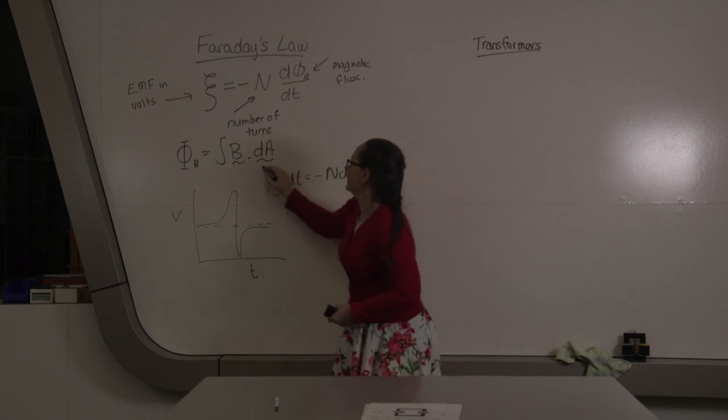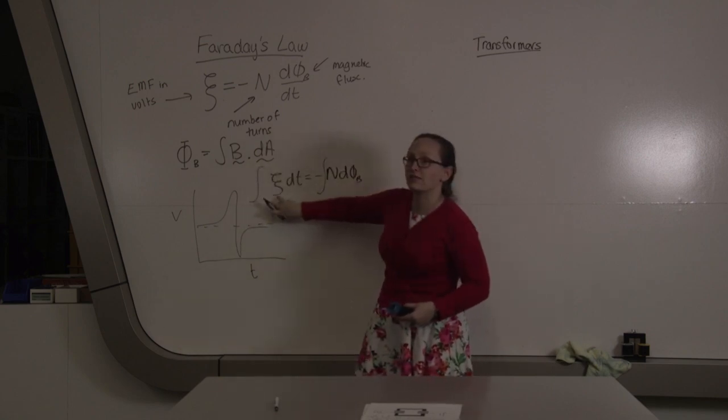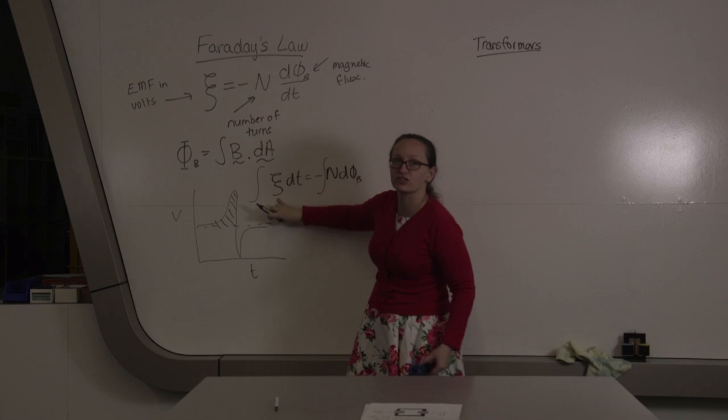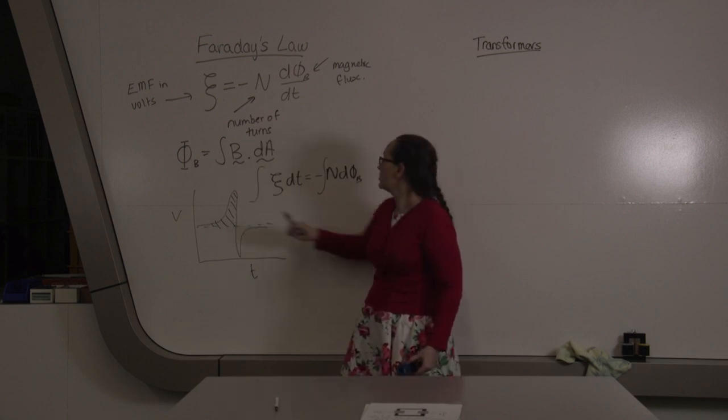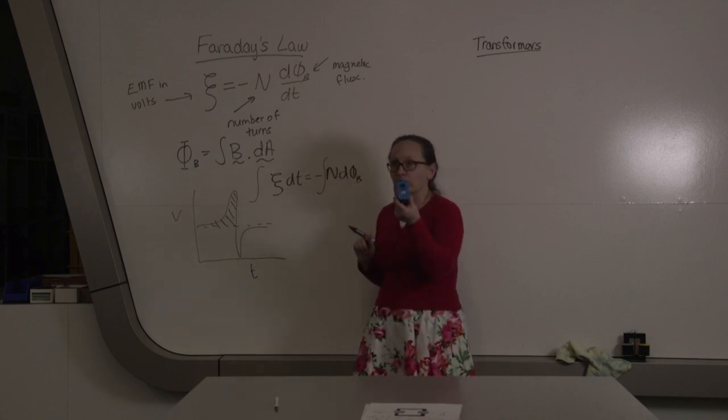If we integrate both sides, then the integral of this side is just the area under your voltage time graph, as this is just the voltage. This is one of the ways that you will be using to calculate the change in flux through your coil of wire.